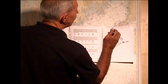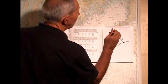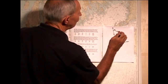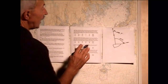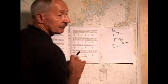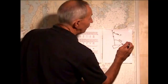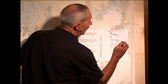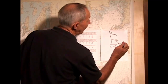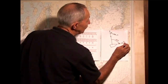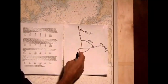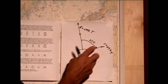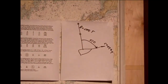If this bearing is 000 true, then that means the course is actually 000 true. In other words, if this line is 0 and this is 70, then that course has to be 70 degrees true.